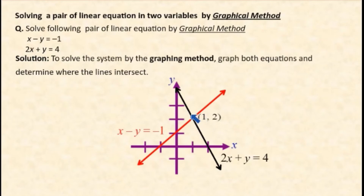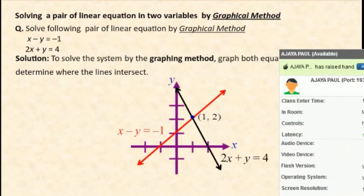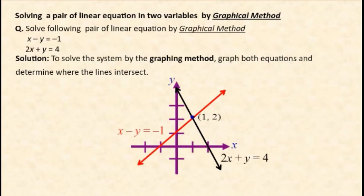For 2x plus y equal to 4, draw its graph. The two lines will intersect at x equal to 1 and y equal to 2. So (1, 2) is the solution of this pair of linear equations. Verify: 1 minus 2 equals minus 1 (correct), and 2 times 1 plus 2 equals 4 (correct). This intersection point satisfies both equations, making it the solution of the pair.